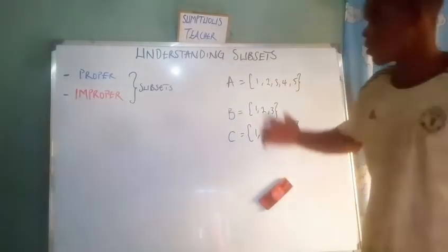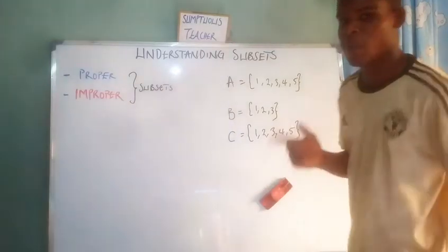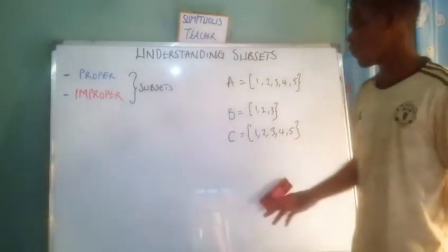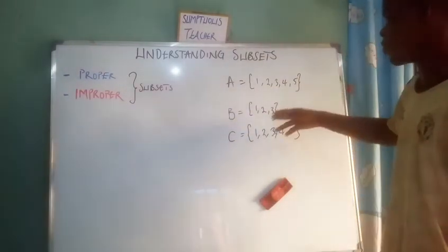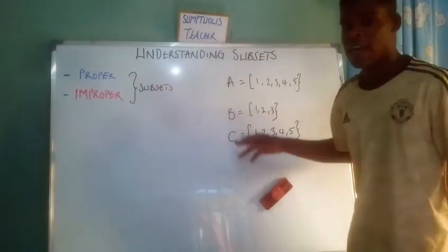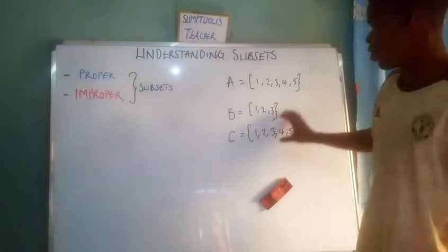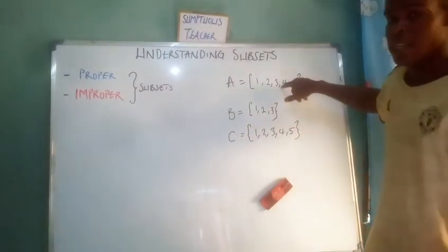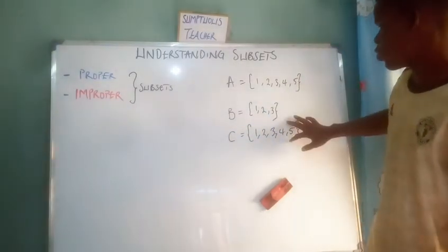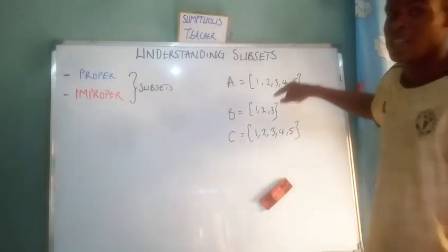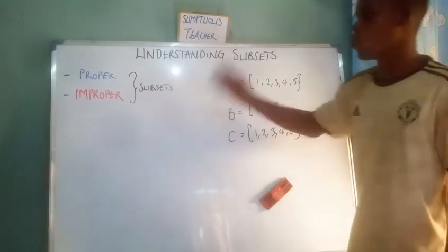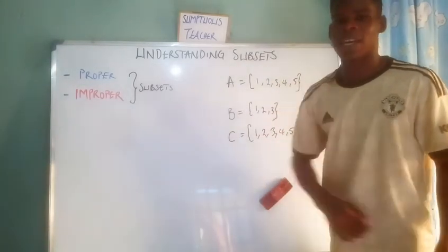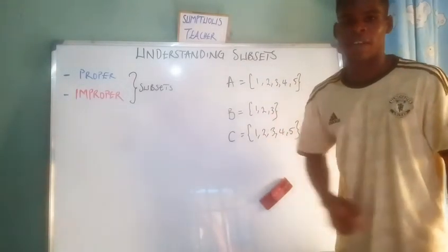To avoid confusion, let's look at the two types of subsets: proper and improper subsets. You'll notice that the elements of B are contained in A but not fully equal to A, while C has the same elements as A — that's the key difference between proper and improper subsets.